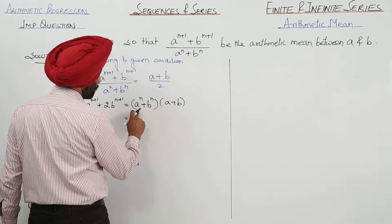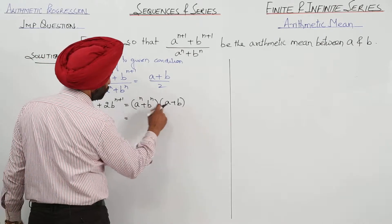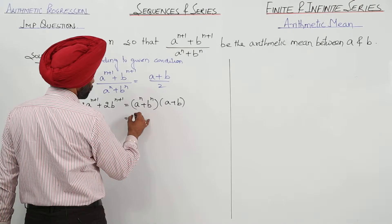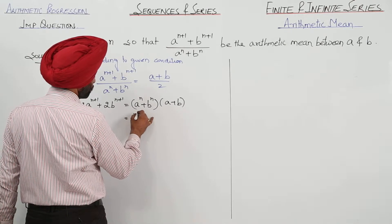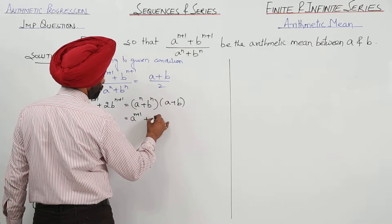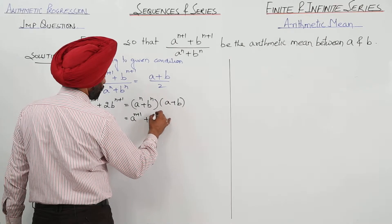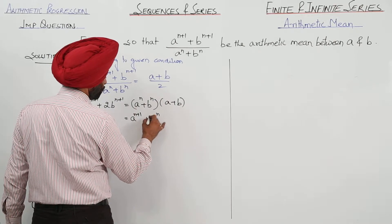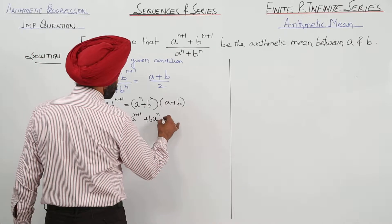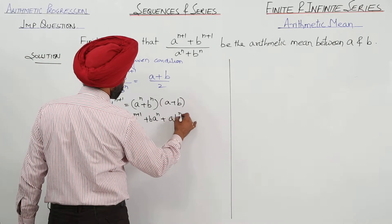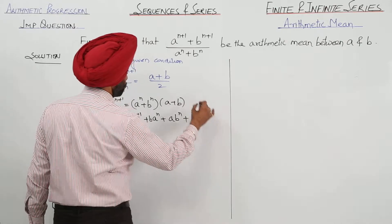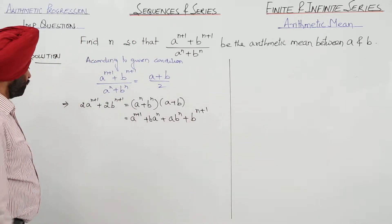Now, expanding the right-hand side: a raised to power n multiplied by a, where bases are equal so powers are added, gives a raised to power n plus 1, plus b times a raised to power n. Similarly, a times b raised to power n plus b raised to power n plus 1.